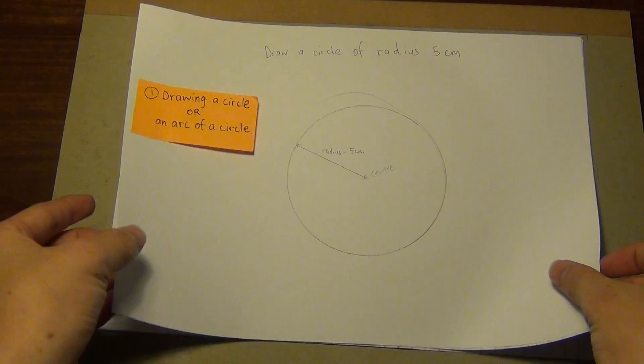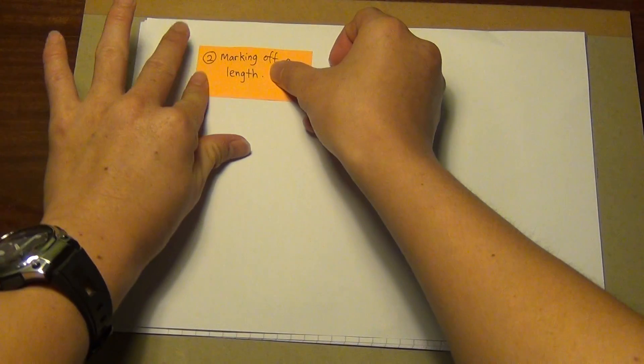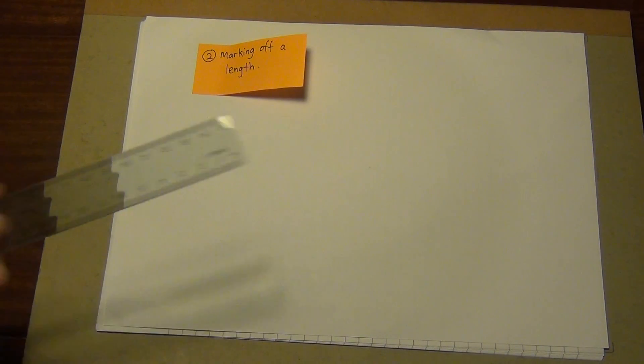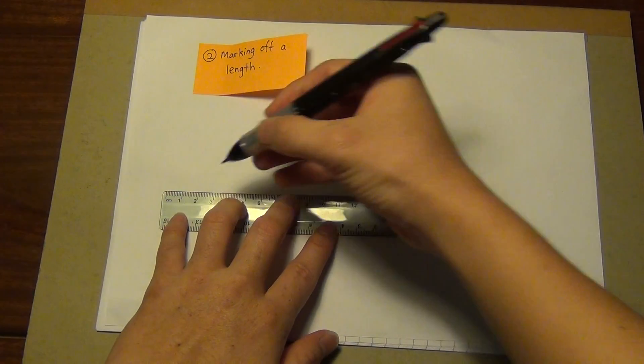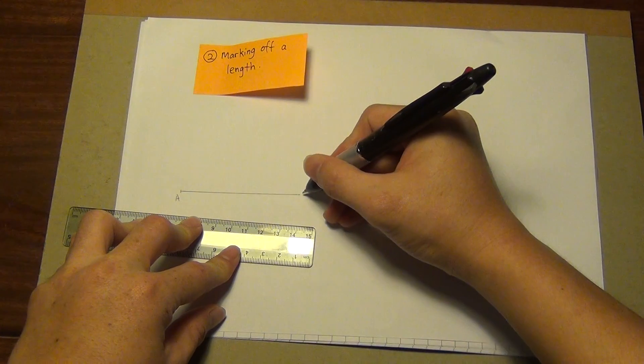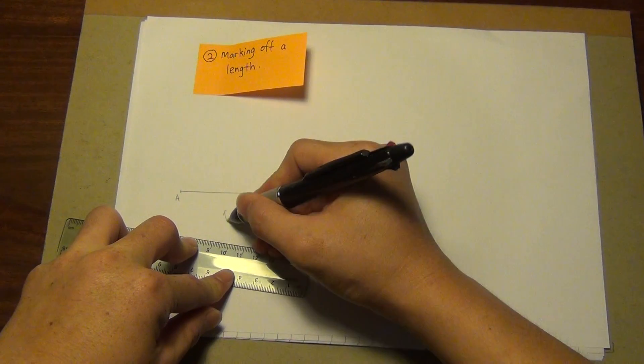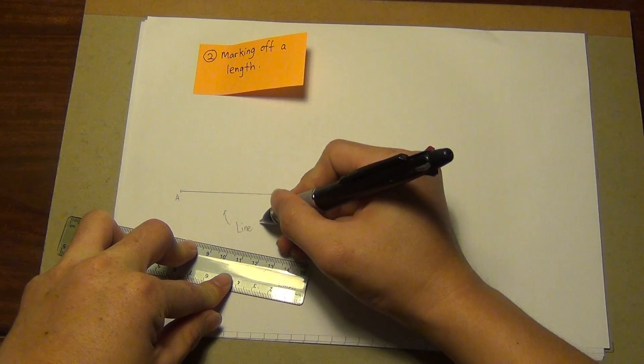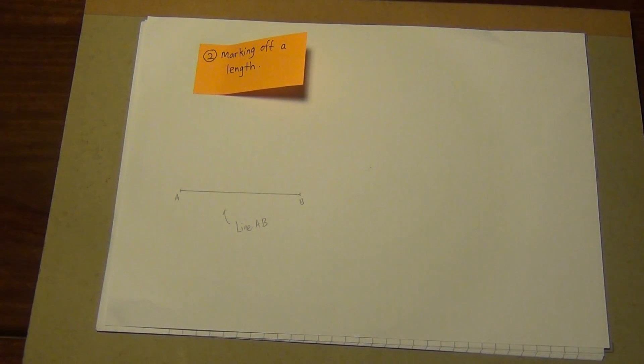Next there is a second use of the compass. The second use is marking off a length. For example, what does it mean by marking off a length? Let me draw a random line. I'll label this line as AB. Without using a ruler, I'm going to mark off the length of AB and draw a line that is of equal length as AB. How am I going to do that?